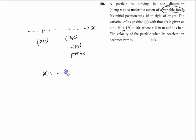x equals minus 3t³ plus 18t² plus 16t, where x is in meters and t is in seconds. We need to find the velocity of the particle when acceleration becomes zero. Recall that velocity is dx by dt.